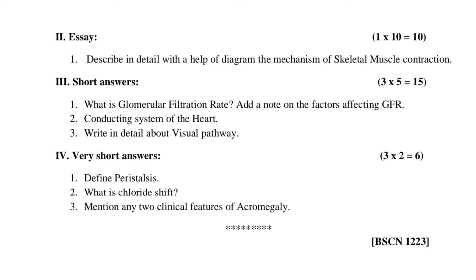That completes Roman numeral I — multiple choice questions in physiology. Roman numeral II: Essay question — Describe in detail with the help of a diagram the mechanism of skeletal muscle contraction. This carries 10 marks. Roman numeral III: Short answers — First question: What is the glomerular filtration rate? Add a note on the factors affecting glomerular filtration rate. Second question: Conducting system of heart. Third question: Write in detail about visual pathway. Each question carries 5 marks, 3 into 5 equals 15 marks.